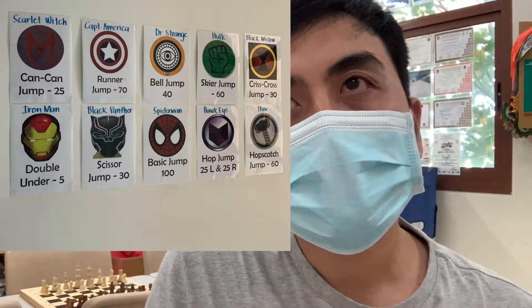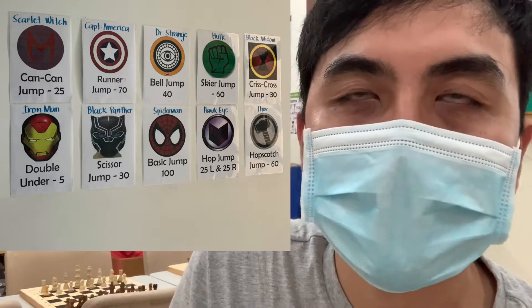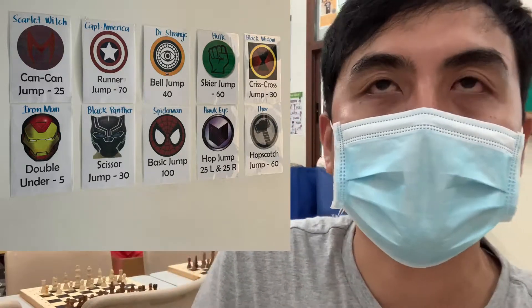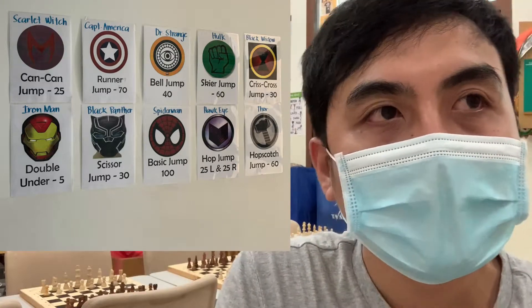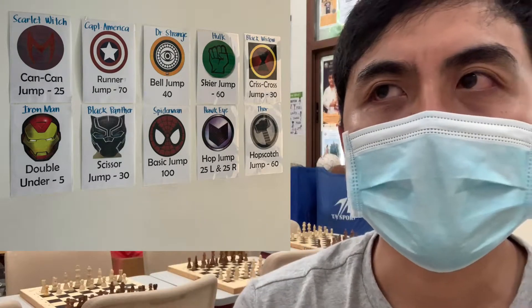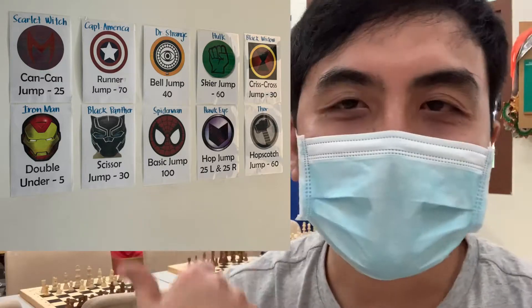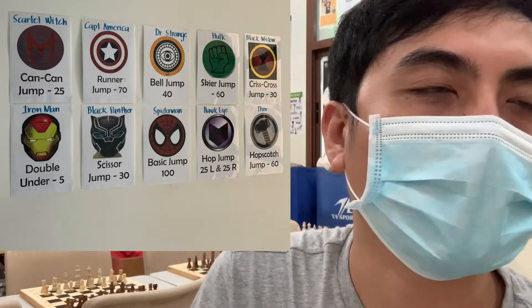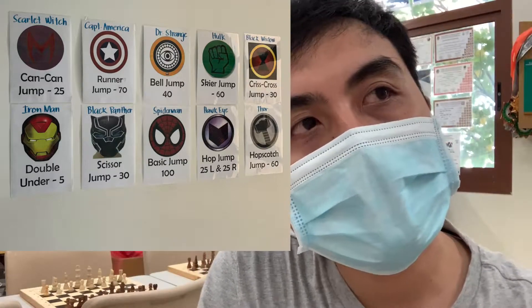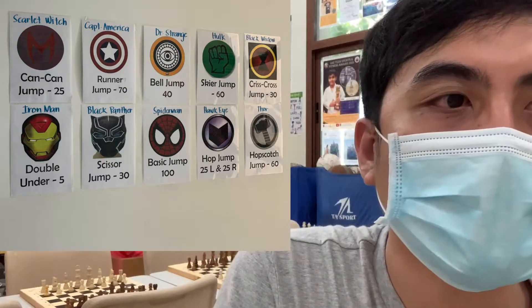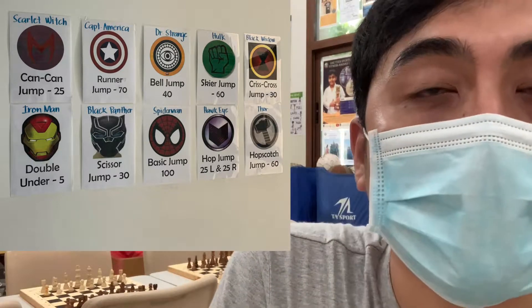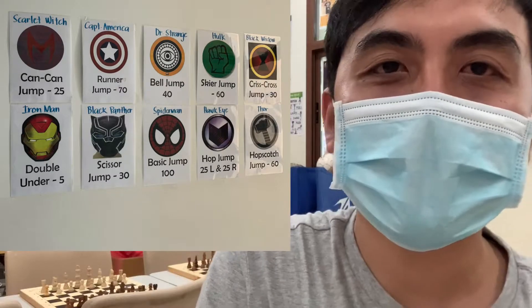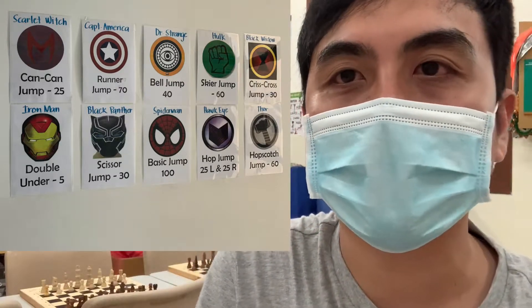So what happens is I throw a challenge every recess and every PE class. I state the number — for example, today's challenge: if you do Ironman Jump, when I say Ironman Jump, they refer to the board and see that it's a double under. If I say you have to do it 10 times in PE class, and they are able to surpass and complete the challenge, they will receive a badge.